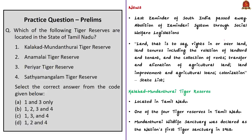The freedom fighters demanded the abolition of the zamindari system. After independence, this task was given to the states as land was made a state subject — covering land rights, land tenures including the relation of landlord and tenant, and the collection of rents. Through various social welfare legislations, the zamindari system was abolished in India. The abolition included taking parts of lands from zamindars and giving them to cultivators, paying compensation to zamindars for land taken, and removing zamindars as intermediaries. These reforms were part of India's land reforms, followed by fixing a limit for land ownership — called land ceiling.